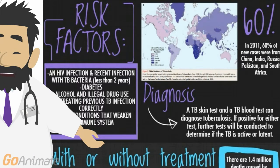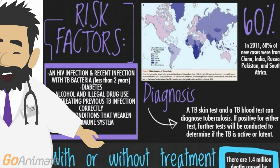Now we have to talk about diagnosis. First, we are going to do a TB skin test. We can also do a TB blood test. If either test comes back positive, we will do further tests — most likely an X-ray or a sputum culture.